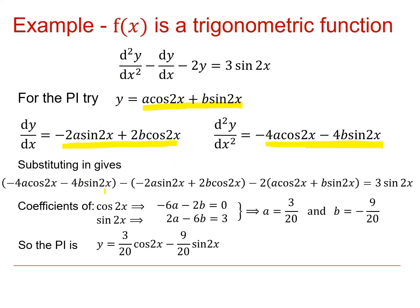And when I plug everything back in, I get this massive equation here. But by teasing out the coefficients for cos 2x, I end up with that. And for sin 2x, I end up with that. And if I put those together as a pair of simultaneous equations, I can get values for a and b, which gives me my particular integral.